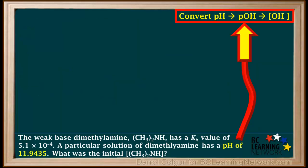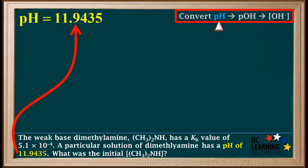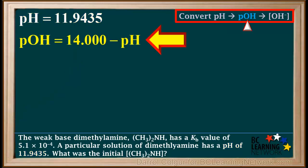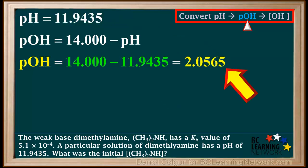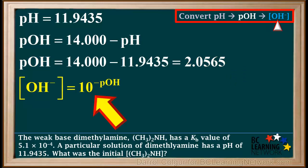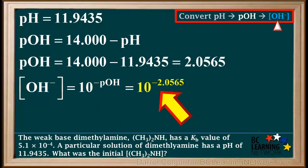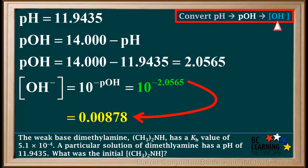We're given the pH and we need the hydroxide ion concentration, so we start by converting pH to pOH and then to hydroxide ion concentration. The pH is 11.9435. The pOH is 14 minus the pH, which is 14 minus 11.9435. Don't worry about significant figures at this point — we will use these numbers as they are and round off later. 14 minus 11.9435 comes out to 2.0565. The concentration of hydroxide ion is 10 to the negative pOH, which is 10 to the negative 2.0565. This comes out to 0.00878. Because the Kb has two significant figures, the final answer to our problem will need to have two significant figures, but we'll use this number for now, expressed as three significant figures, and round off later.